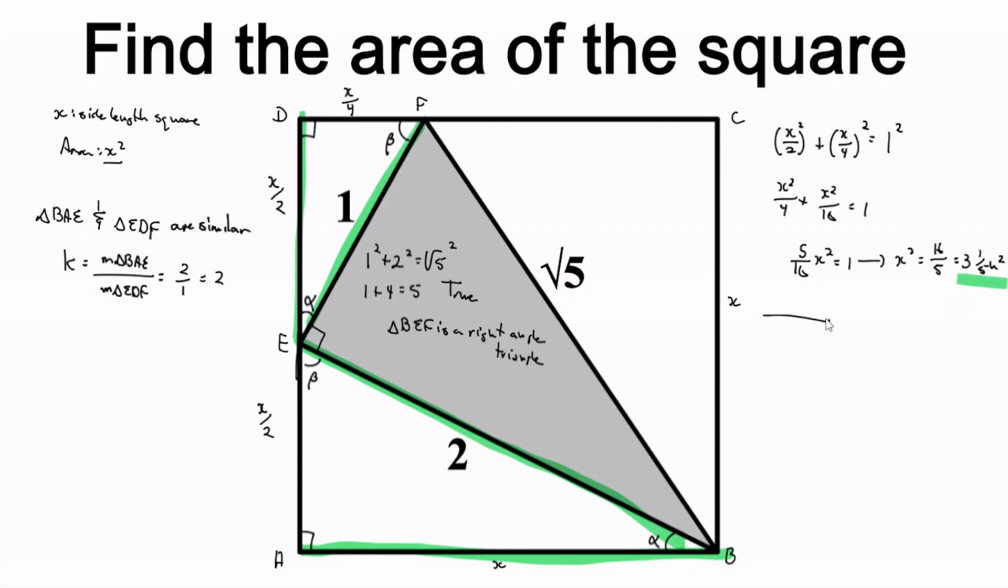And if we want, we can use the other triangle now to verify our answer. So the other triangle is X squared plus X on 2 all squared is equal to 2 squared now. So we'll get X squared plus X squared on 4 is equal to 4. We'll get 5 on 4 X squared is equal to 4. And once again, we have shown that X squared is equal to 16 on 5 or 3 and 1 fifth square units.